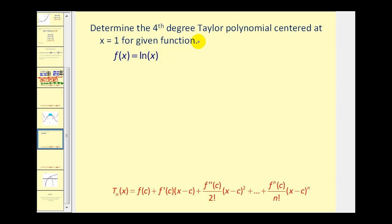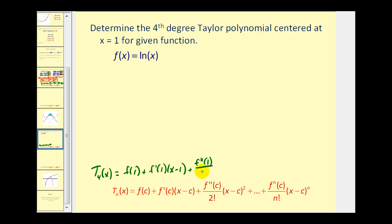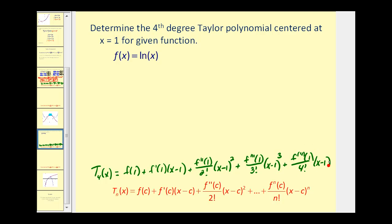Let's try one more. Here we want to determine the fourth degree Taylor polynomial centered at x equals one for the given function. We'll have f of one, plus f prime of one times x minus one — since c equals one — plus the second derivative at one divided by two factorial times x minus one squared, plus the third derivative at one divided by three factorial times x minus one to the third, and lastly the fourth derivative at one divided by four factorial times x minus one to the fourth power.